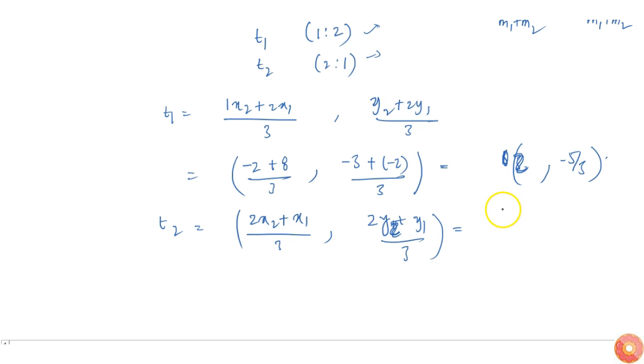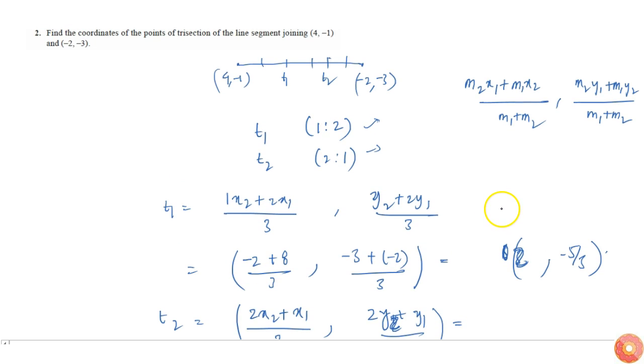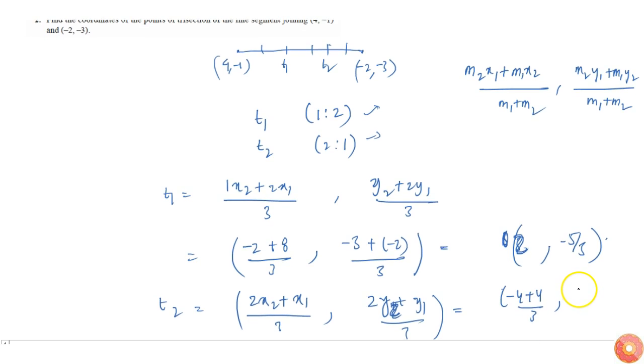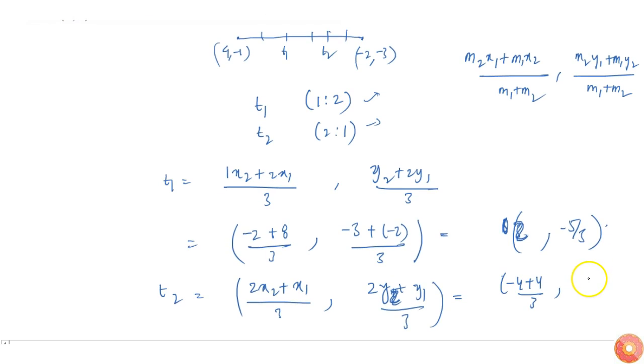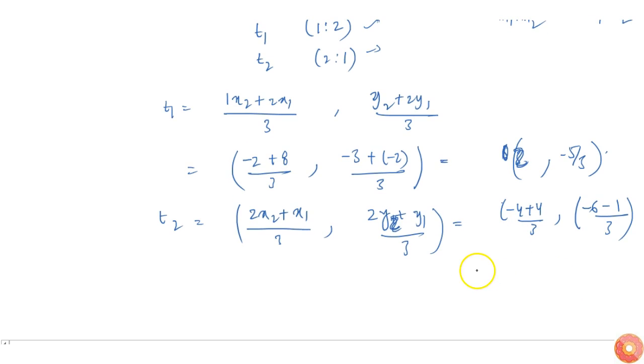This will be equal to 2 times x2 which is -2, that is -4, plus 4, by 3. And 2 times y2 which is -6 minus 1, by 3. So this will become 0, -7/3. I am just using the formula which I know, putting the values there, and I will get the answer.